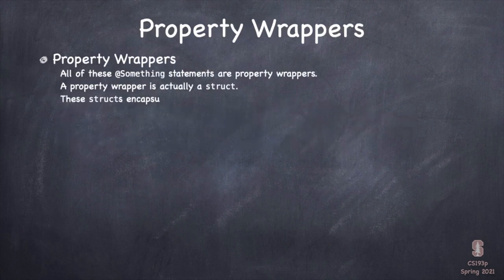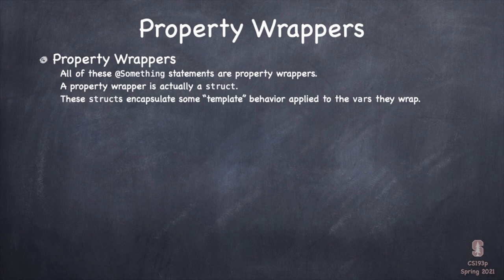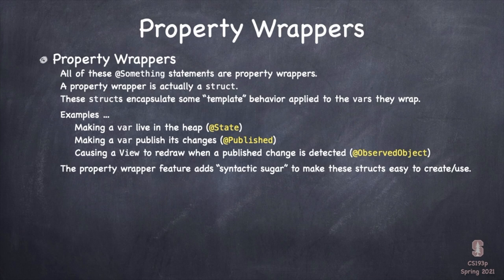Let's dive right into this property wrapper thing. These at-sign something statements are called property wrappers. A property wrapper is just a struct, and these structs encapsulate some sort of template behavior applied to the vars that they're wrapping. Good examples are @State, @Published, @ObservedObject. Mostly they're providing syntactic sugar to make it easier to do things, but they're really essential to making SwiftUI work.